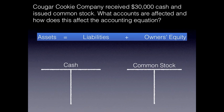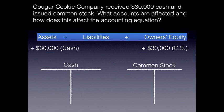So the problem states that we received $30,000 in cash. Hopefully you discerned that assets are going up by $30,000 because we're getting cash. It also says we issued common stock, so common stock is increasing, which is under owner's equity — increasing common stock will also increase owner's equity. Assets going up is a debit to the asset account, in this case the cash account. We will debit the cash account for $30,000. Common stock increases with credits, so we will credit the common stock T-account.